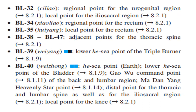Bladder 38 to Bladder 47 are adjacent points for the thoracic spine. Bladder 39 is the lower He-sea Point for the Triple Burner. Bladder 40 is the He-sea Point, Earth point, and lower He-sea Point for the Bladder. It is also the command point for the back and lumbar region, the Ma Dan Yang Heavenly Star Point, and the distal point for the thoracic and lumbar spine as well as the ileo-sacral region. Bladder 40 is also the local point for the knee.